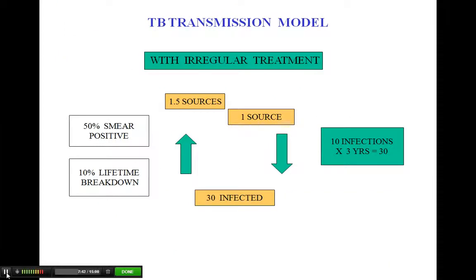Let's see what happens as far as MDR is concerned. Let's imagine that we are providing irregular treatment. Irregular treatment can be considered here as either prescription of wrong regimens in terms of doses, choice of drugs, or duration; use of poor-quality drugs; or, maybe most importantly, lack of adherence. In this case, we increase the duration of the infectious period up to three years, so we will have 30 infected. The one source will produce 1.5 sources — a double damage. First, we increase the number of TB cases, leaving the situation worse than we found it. Second, we no longer have drug-susceptible strains, but drug-resistant or even multi-drug-resistant strains, and this is what should never happen.